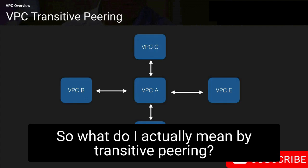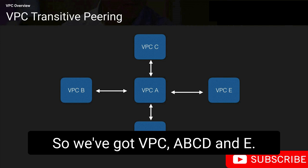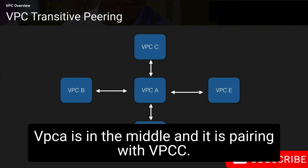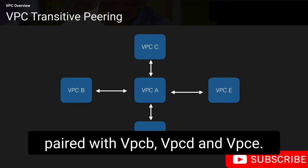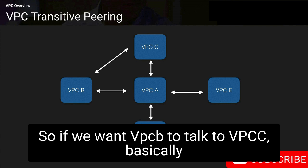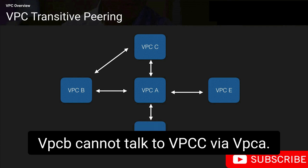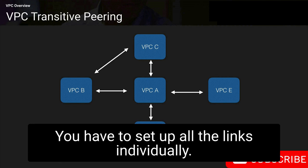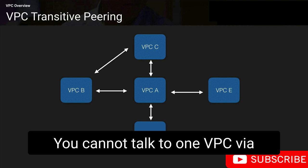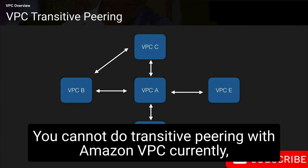So what does transitive peering mean? Let's say we have five VPCs: A, B, C, D, and E. VPC A is in the middle and is peered with VPCs B, C, D, and E. If we want VPC B to talk to VPC C, we have to create a direct peer between those two VPCs — VPC B cannot talk to VPC C via VPC A. That's what we mean by transitive peering. You cannot talk to one VPC via another VPC, so you must set up all links individually.